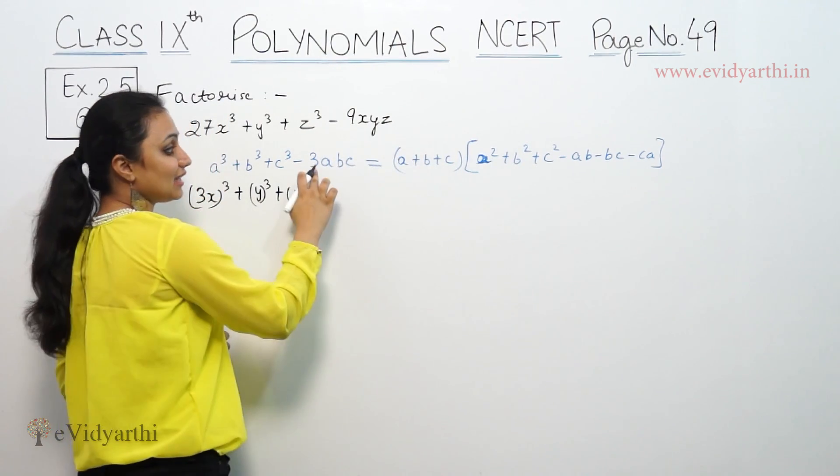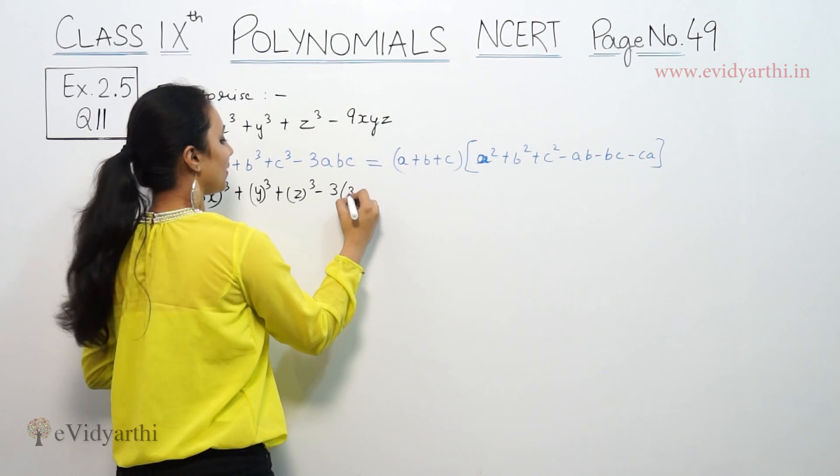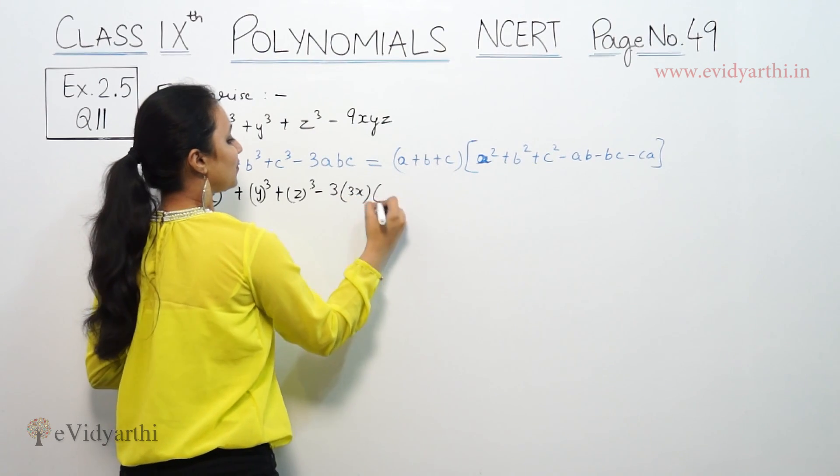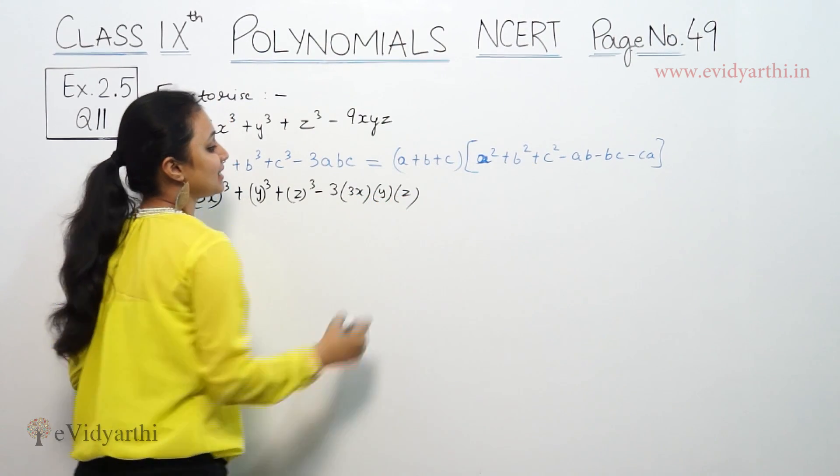Basically, comparing with the identity, a can be 3x, b can be y, and c can be z. So when you multiply, 3 cubed gives 27x cubed, which matches, and 3abc gives 3 times 3x times y times z, which equals 9xyz.